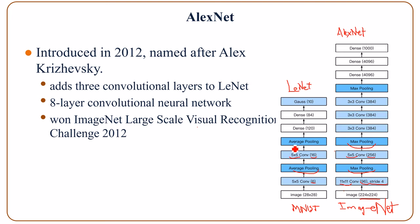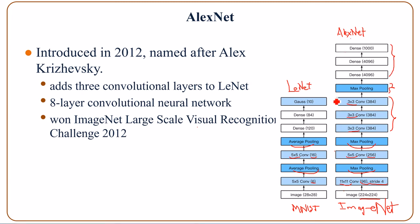Max pooling is used instead of average pooling. On top of it, we can see 3 additional convolutional layers, each with 384 channels. The size of the window in each layer is 3 by 3. The 3 convolutional layers are followed by the max pooling layer and the fully connected layers, just like what we see in LeNet. The number of class outputs is much larger — 1000 compared to 10 in LeNet.